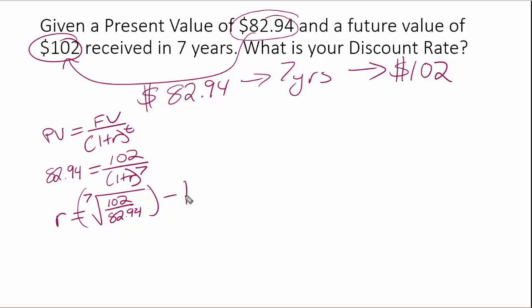So basically, we're taking this 102 divided by 8294 and raising it to the one-seventh power, and subtracting the one off of that. And that's going to end up giving us 0.03 or 3%.